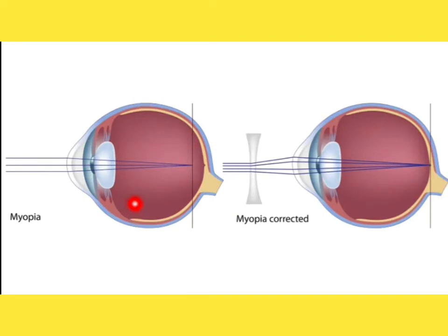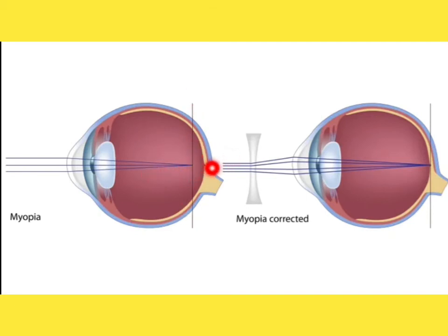In myopia, also known as nearsightedness, concave or minus lenses are used. Parallel rays of light coming from infinity get focused in front of the retina. This occurs because the axial length is larger than normal — the normal axial length is 23.4 to 24 millimeters, but if the axial length is 25 or 26 mm, it leads to myopia. A steeper-than-normal cornea can also lead to myopia.